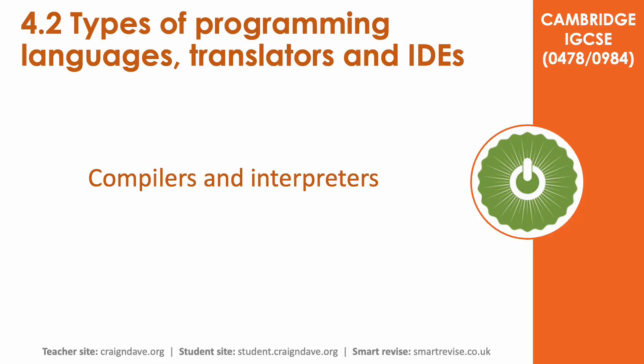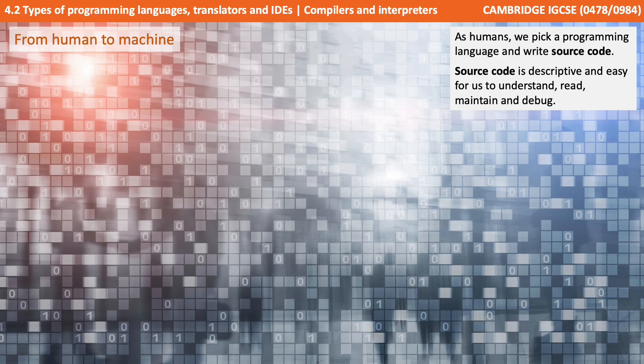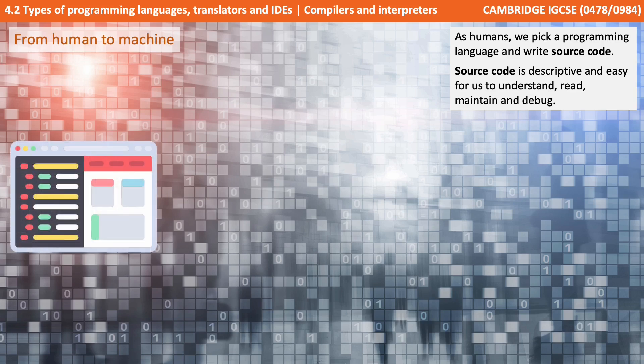In this video we look at compilers and interpreters. As humans we pick a programming language and write source code. Source code is descriptive and easy for us to understand, read, maintain and debug.